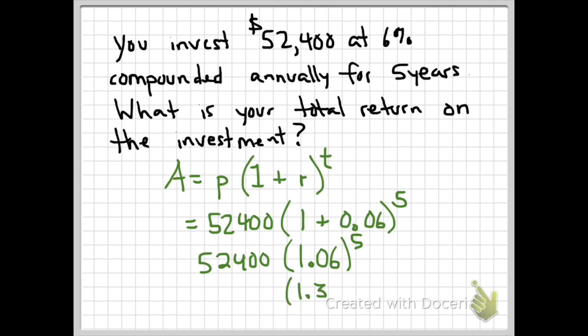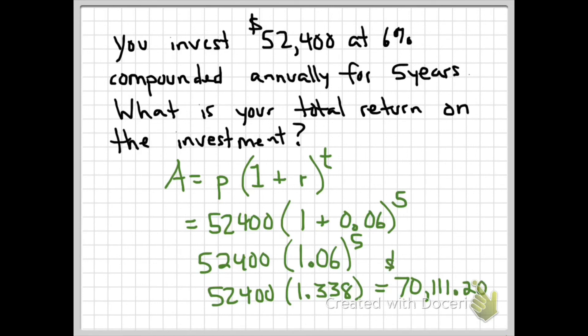1.06 raised to the fifth power equals approximately 1.338. We then take 1.338 and multiply it by our initial principal of $52,400. The resulting balance would be $70,111.20.